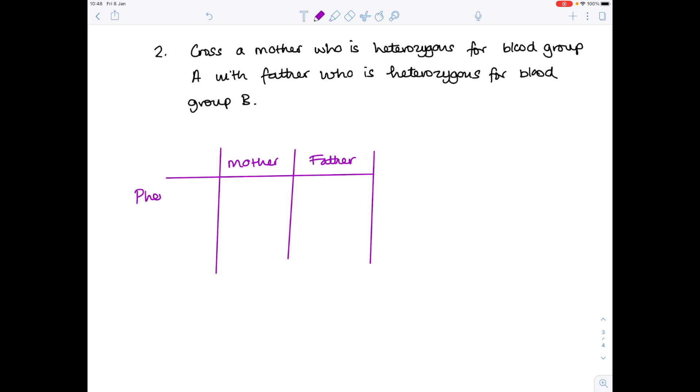So starting with the mother's phenotype we know that she is blood group A, the father has blood group B. What's their genotype? Well because they're heterozygous we know that they must contain that O allele. What are the potential gametes?